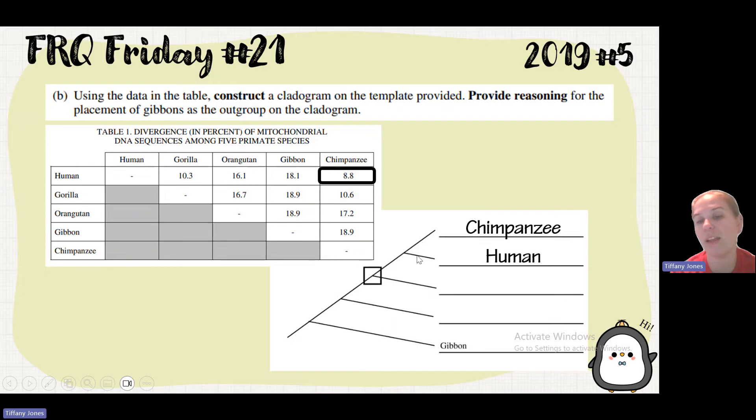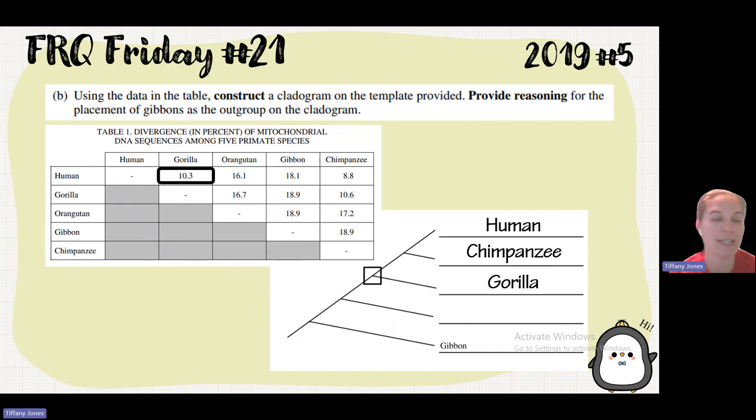Now remember that if we have a branch point, you can rotate on that branch point. And so this could also be human and chimpanzee. So either the chimpanzee then the human, or the human then the chimpanzee. This is the branch point so it can rotate. So now we can look and say, okay, what's next in our percent divergence? 10.3 with the gorilla. So we put the gorilla next. And then 16.1 with the orangutan. And then last but not least, we of course have the gibbon that was placed last.